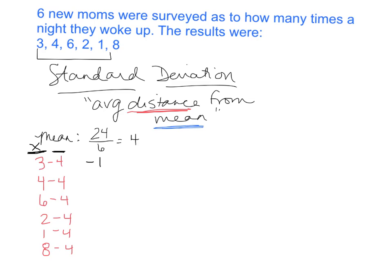Notice the order: I always start with my data point — we call these x values — and I subtract the mean from those. The values I get are: negative one, zero (that person was right at the average), positive two, negative two, negative three, and positive four. Those are my distances.